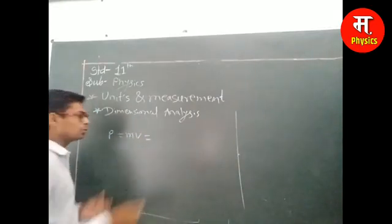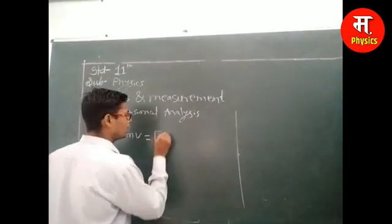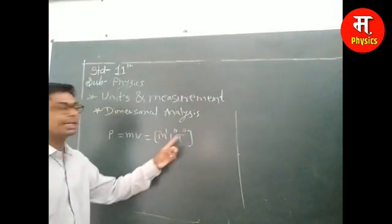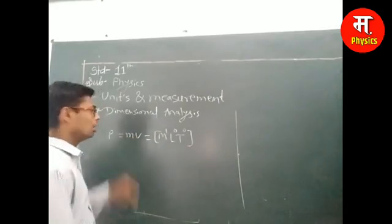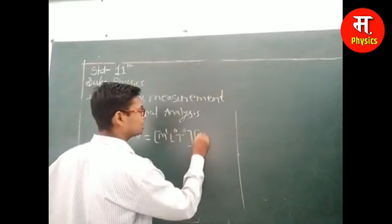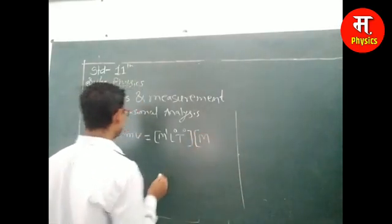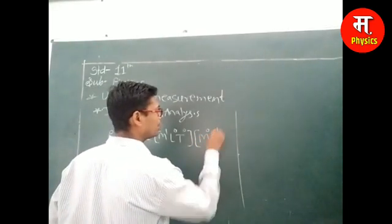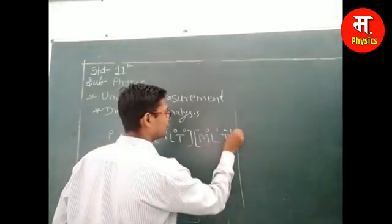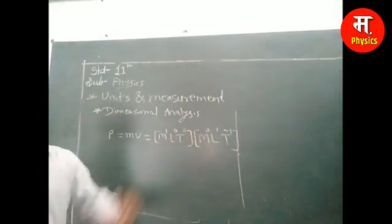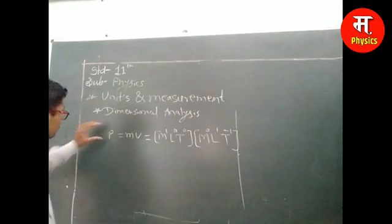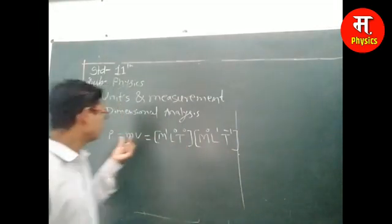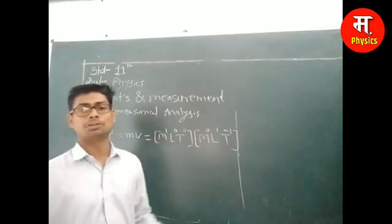Now, the dimension of mass is M1, L0, T0 — because mass is just mass, there is no length or time involved. And the dimension of velocity: velocity is meter per second, so its dimension is M0, L1, T-1.